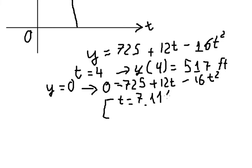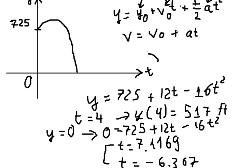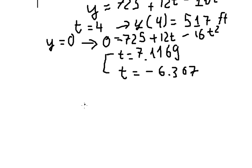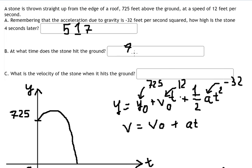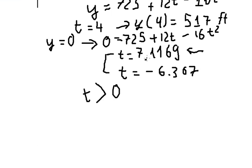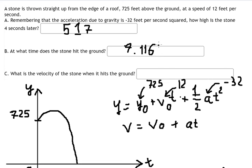The second solution is t equals negative 6.3167. Because this is about time, time is always a positive number, so we select the positive root: t equals 7.11169 seconds.